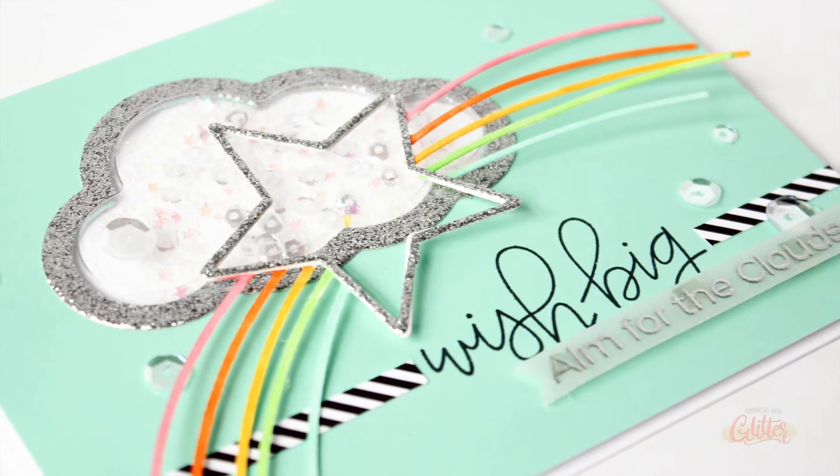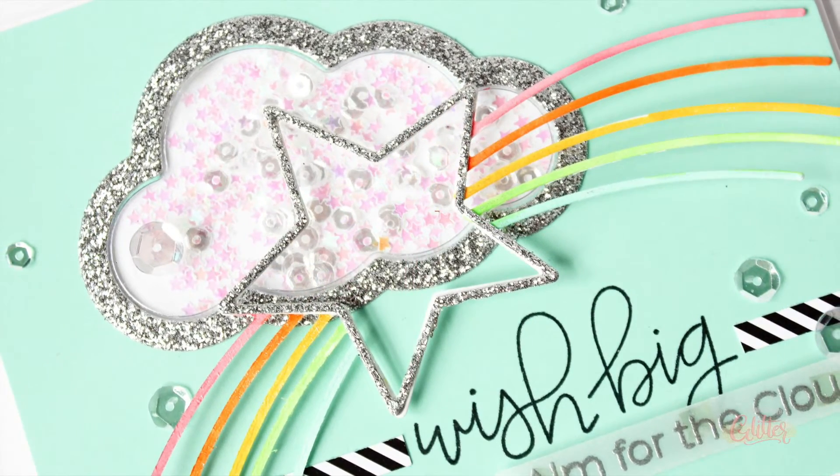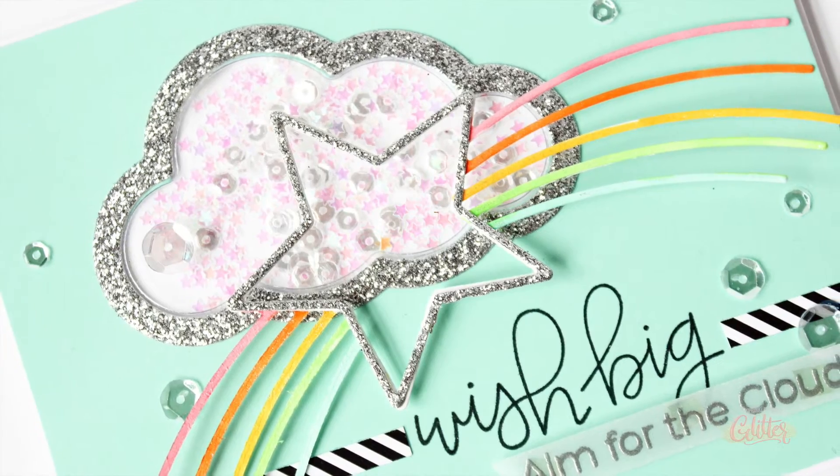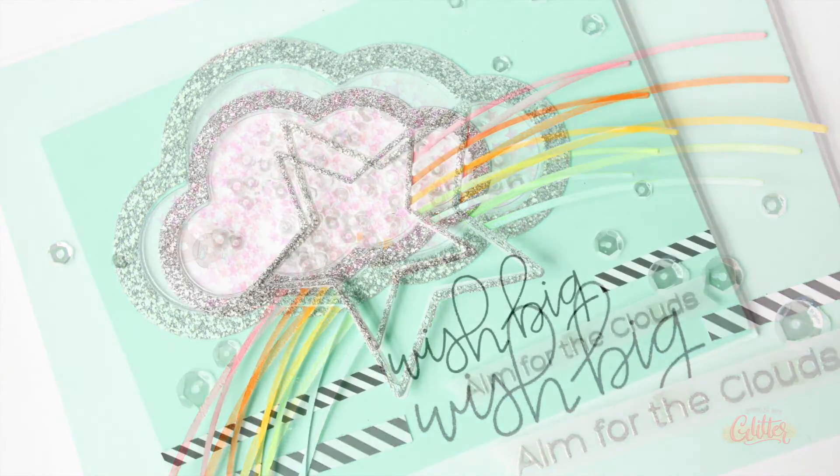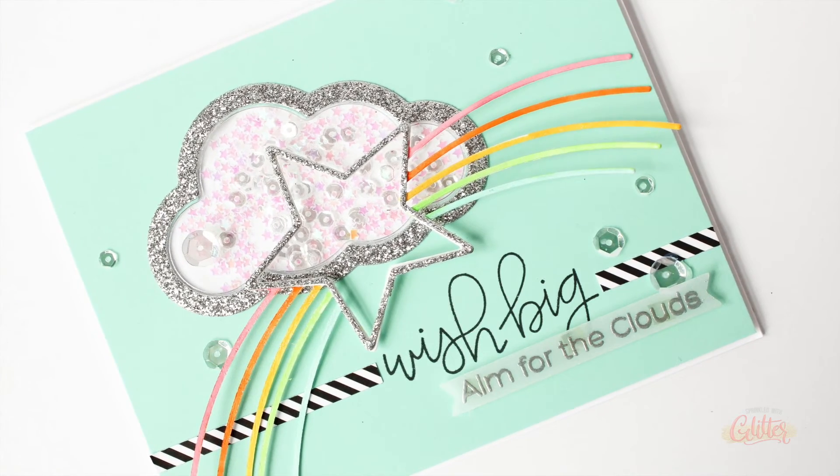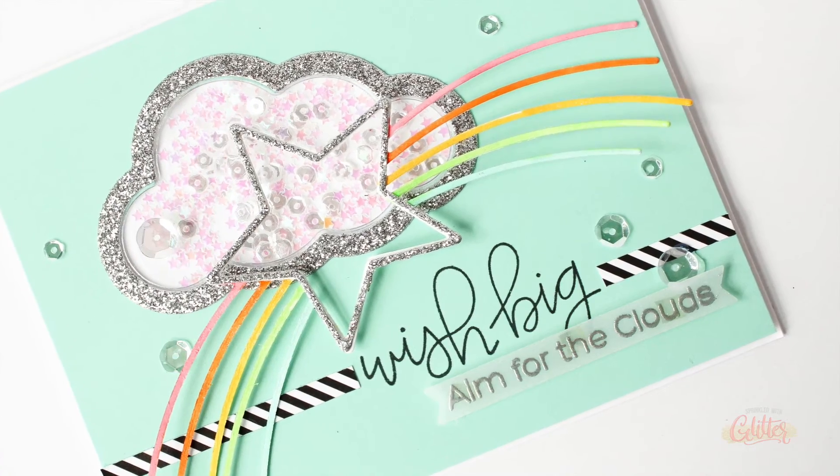It's got some fun things going on. It has glitter, it has sequins, it has rainbows, it has black and white stripes and scripty sentiments. I mean, I don't think you can ask for much more than that. You can see how easy it was to put that shaker element together using those My Favorite Things shaker pouches, which I love so much.